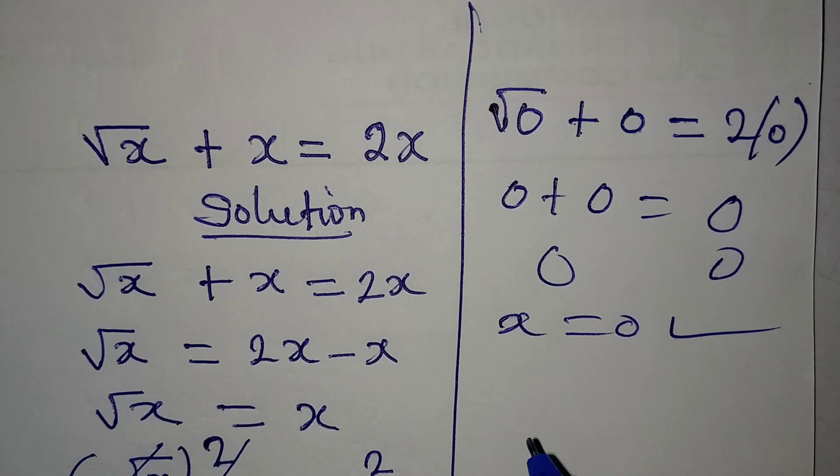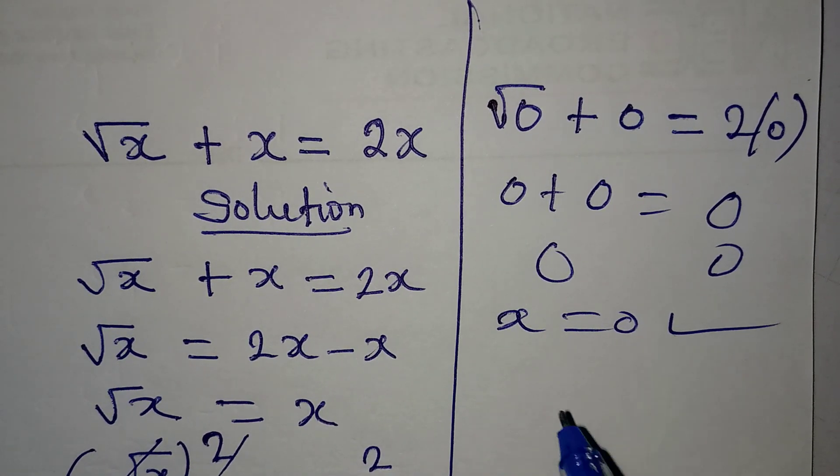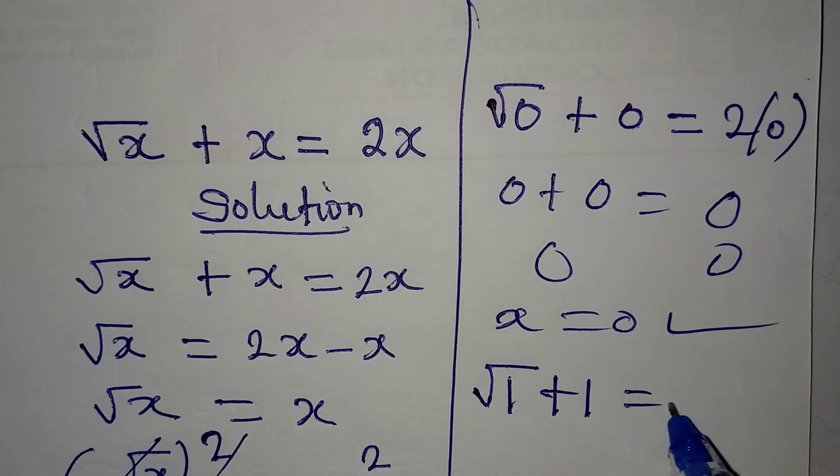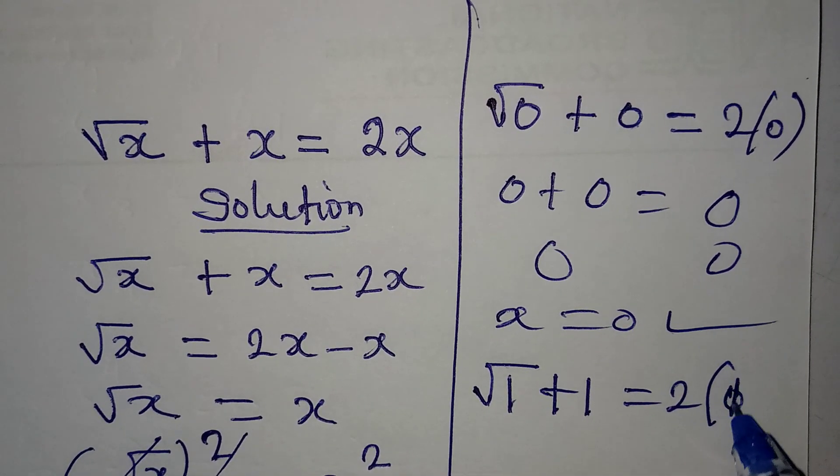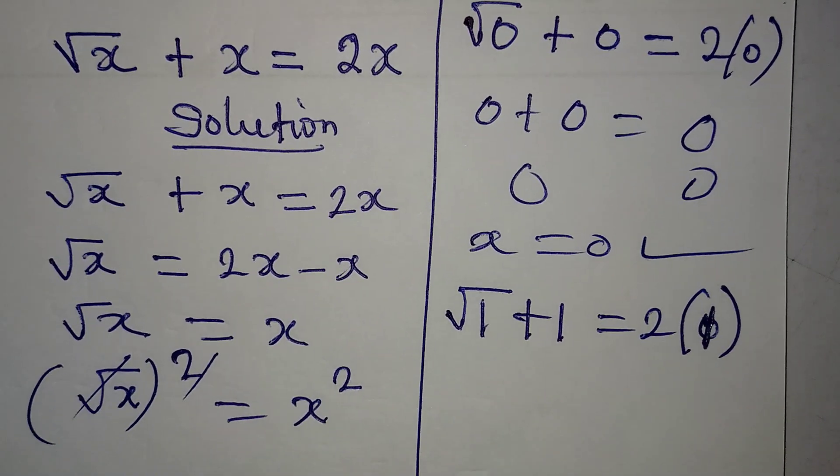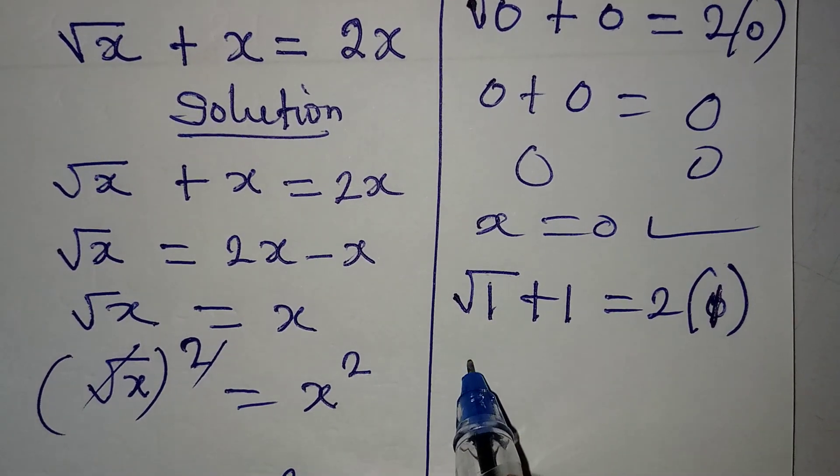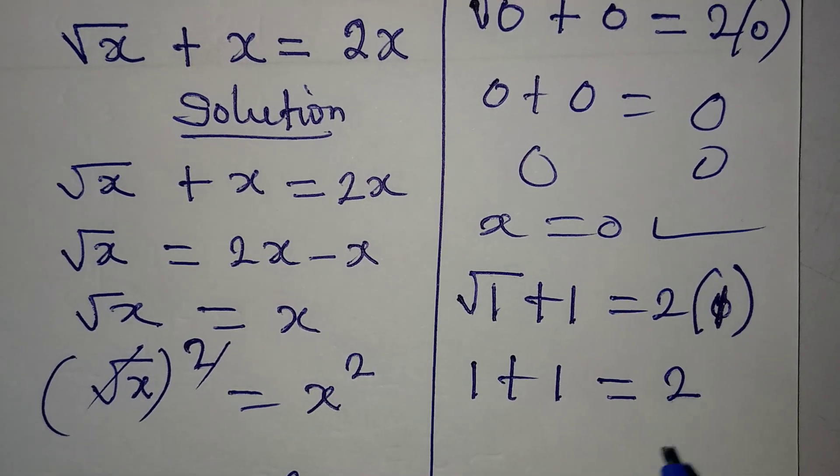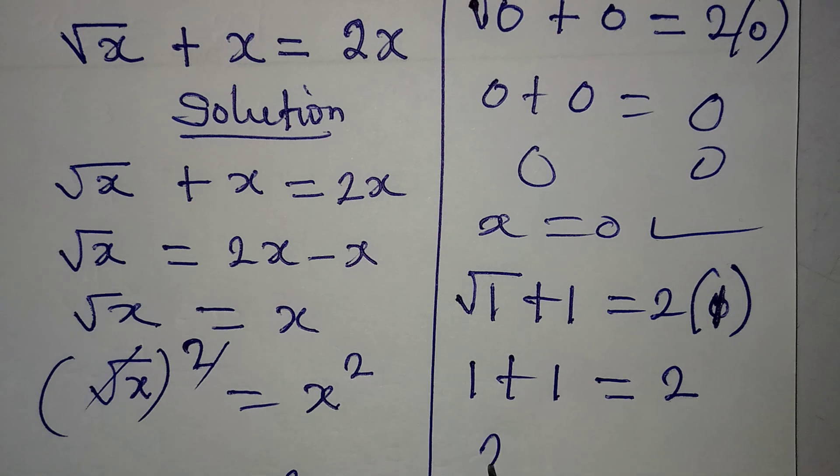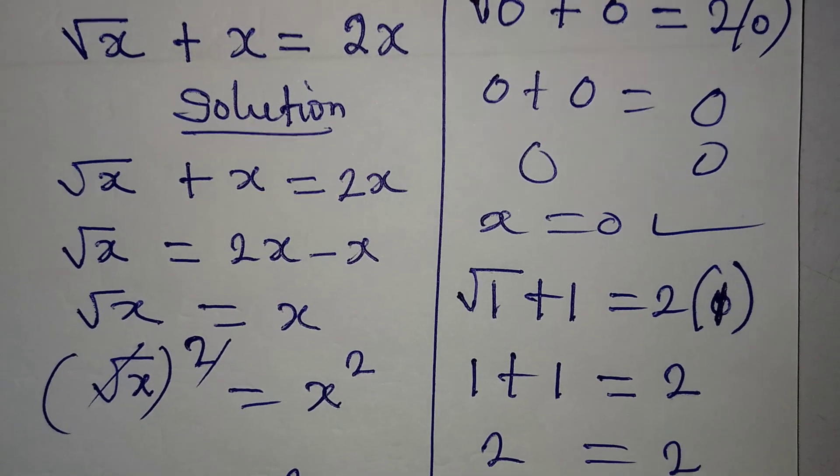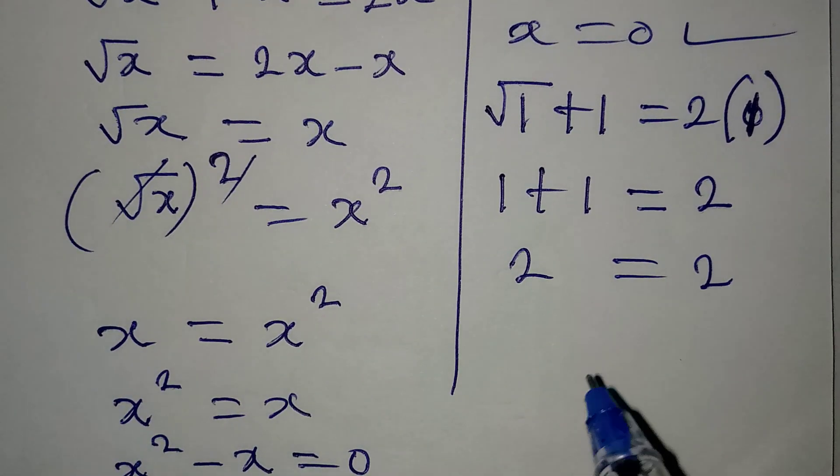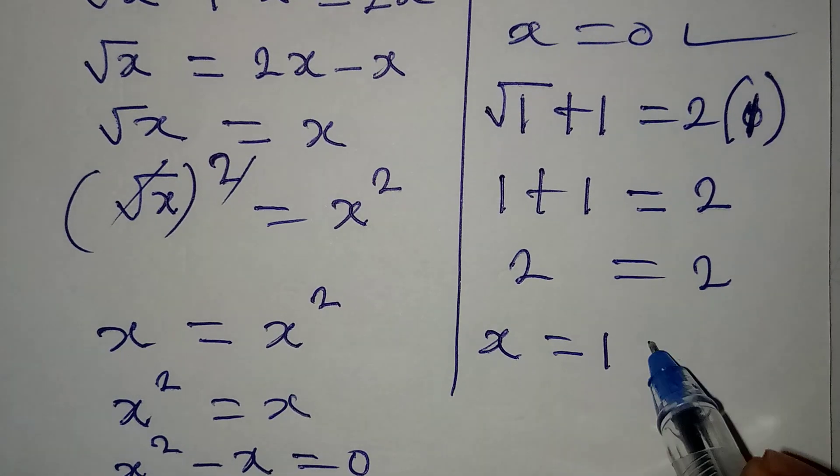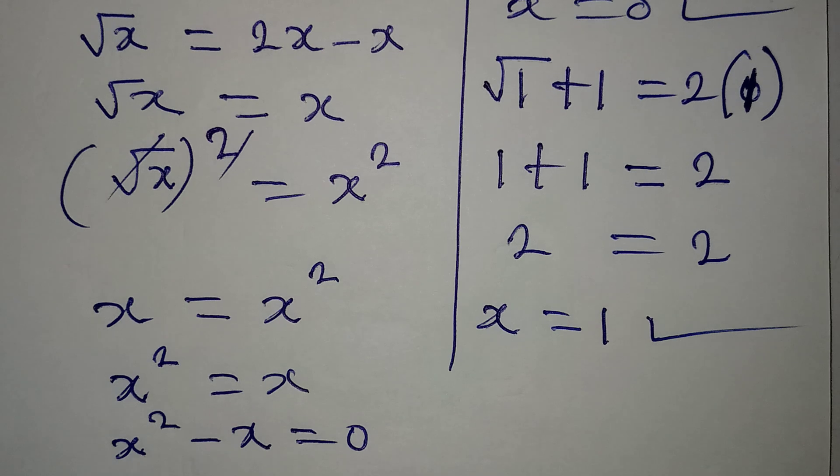Now let's try one. If you're going to work with one, then we'll have square root of one plus one equal to two multiplied by one, because x is one. Now square root of one is one plus one, and that should be equal to two times one is two. And then one plus one is two, so we have two on both sides. So this is also a confirmation that x equal to one also satisfies the given equation.